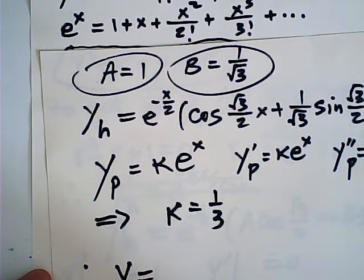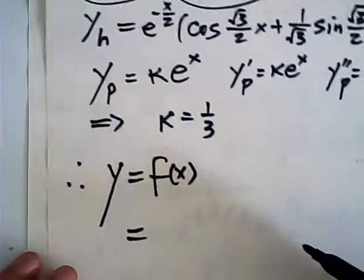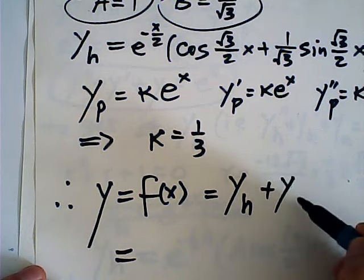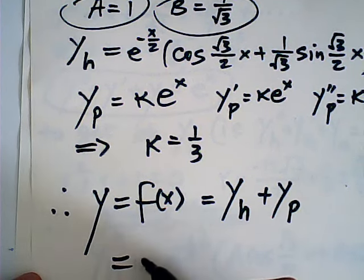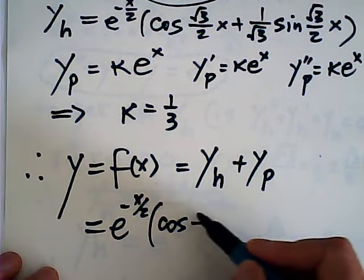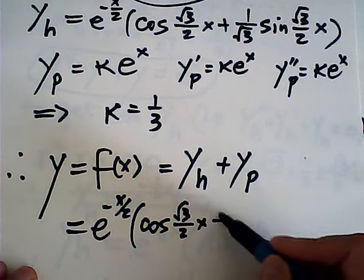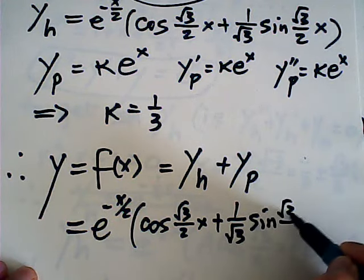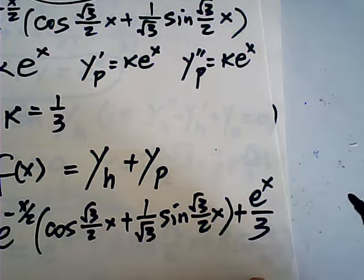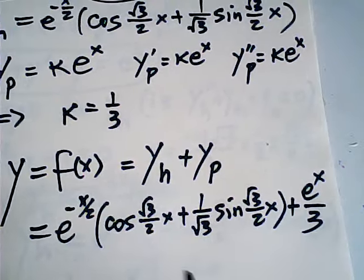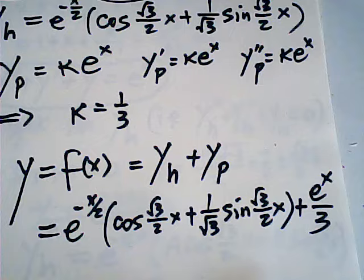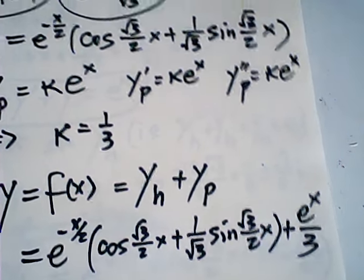Therefore, the general solution f of x equals the homogeneous solution plus the particular solution, which is: e to the negative one-half x times the quantity cosine of (root 3 over 2)x plus (1 over root 3) sine of (root 3 over 2)x, plus one third e^x. That is the f of x we are looking for — a wonderful solution! Thank you for watching.